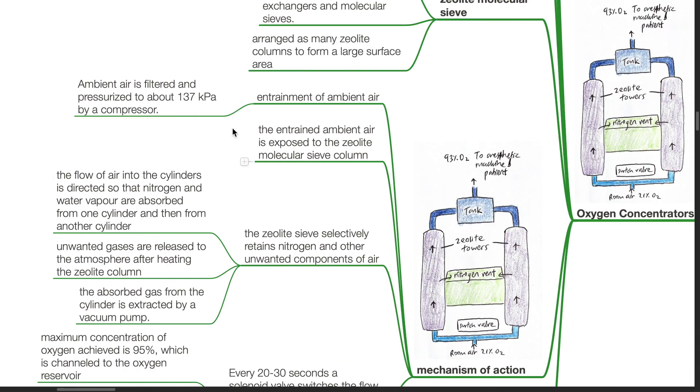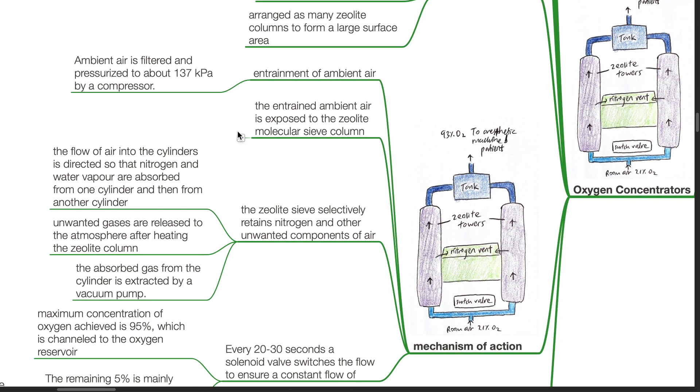Mechanism of action: Entrainment of ambient air. Ambient air is filtered and pressurized to about 137 kPa by a compressor. The entrained ambient air is exposed to the zeolite molecular sieve column. The zeolite sieve selectively retains nitrogen and other unwanted components of air. The flow of air into the cylinders is directed so that nitrogen and water vapor are absorbed from one cylinder and then from another cylinder.